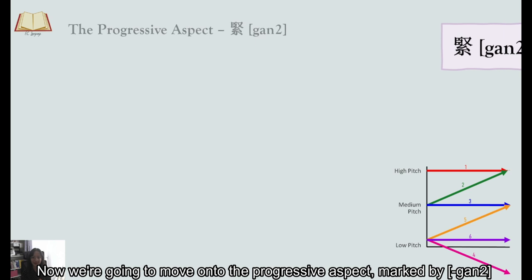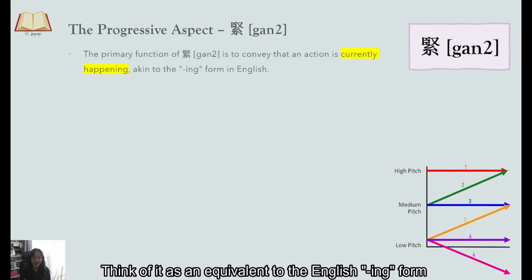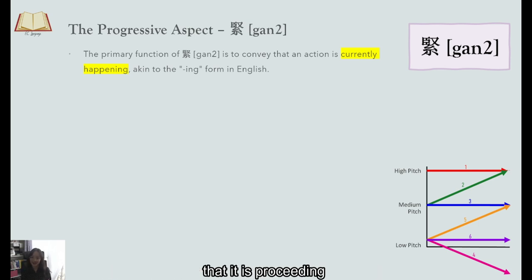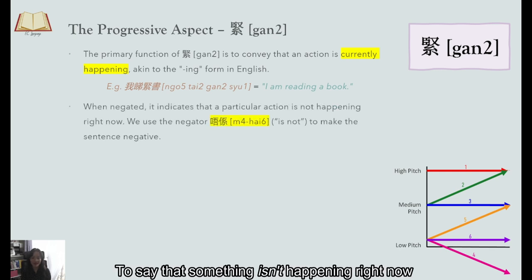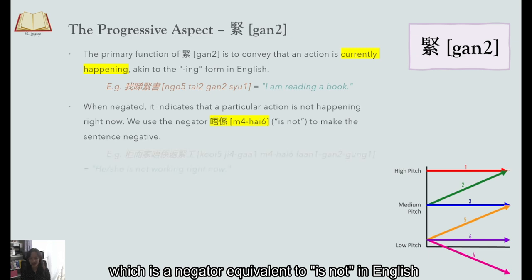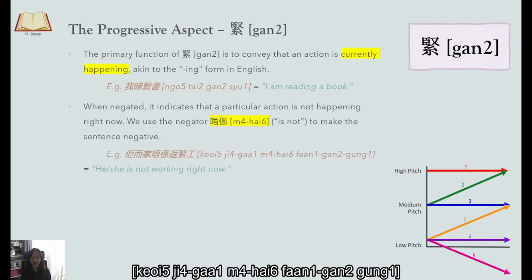Now we're going to move on to the progressive aspect marked by 緊 Think of it as equivalent to the English ing form It is used to indicate that an action is happening right now that it is proceeding in this very moment as we speak For example 我睇緊書 I am reading right now as we speak To say that something isn't happening right now we use 唔害 which is a negator equivalent to the phrase is not in English